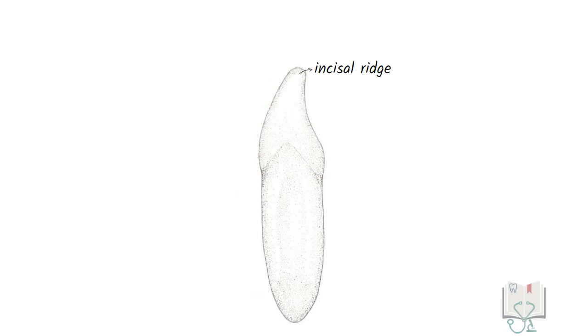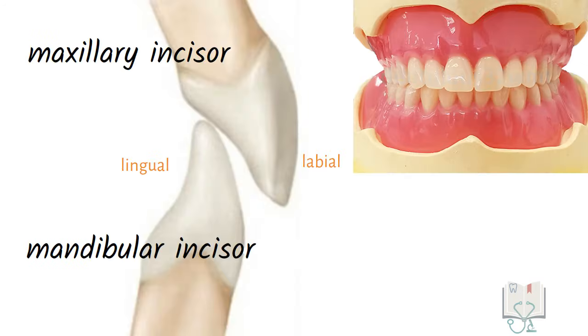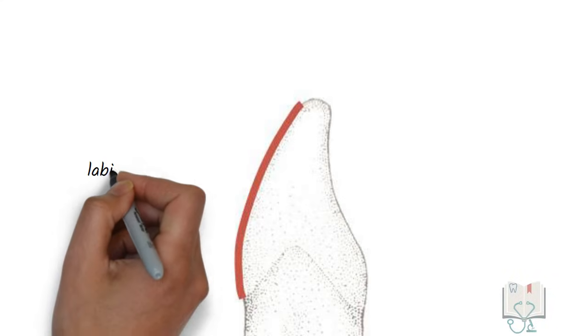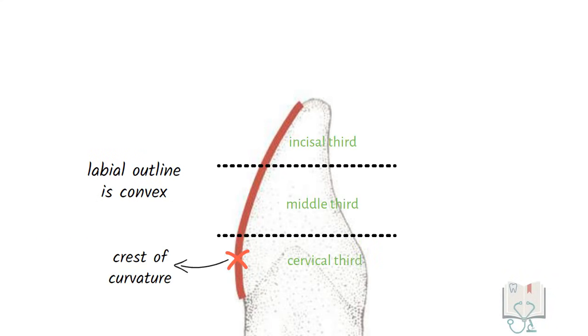The incisal ridge is lingual to the midline axis of the tooth. This feature is seen in all mandibular incisors which helps in placing them lingual to the maxillary incisors. The labial outline is convex with its maximum convexity in the cervical third. In comparison to maxillary central incisors, this convexity is less and is almost flat in the incisal third.